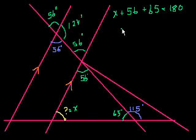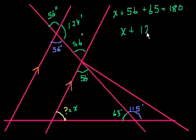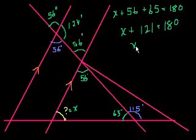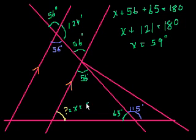We know that x plus 56 plus 65 equals 180. What's 56 plus 65? That's 121. So x plus 121 equals 180, and x equals 180 minus 121, which is 59 degrees. We have accomplished our first goal in the angle game.